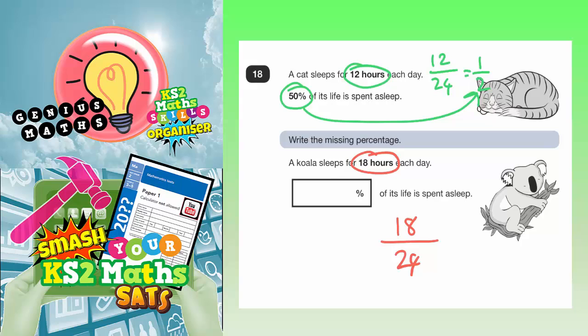To simplify a fraction, you divide both numbers by something that goes into both 18 and 24. Well, 18 and 24 are both in the 6 times table, so we can divide them both by 6. So 6 into 18 goes 3 times, and 6 into 24 goes 4 times. So 18 out of 24 is equivalent to 3 quarters.